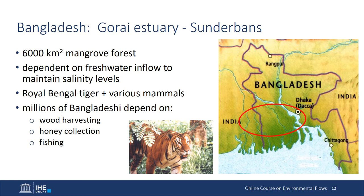In Bangladesh, the Sundarbans mangrove area depends on freshwater influx from the Gorai River and the Ganges River. These are important to maintain low salinity levels. This area is home to the Royal Bengal Tiger and many other species. Local communities depend on this area for wood, harvesting of products such as honey, and also fishing.